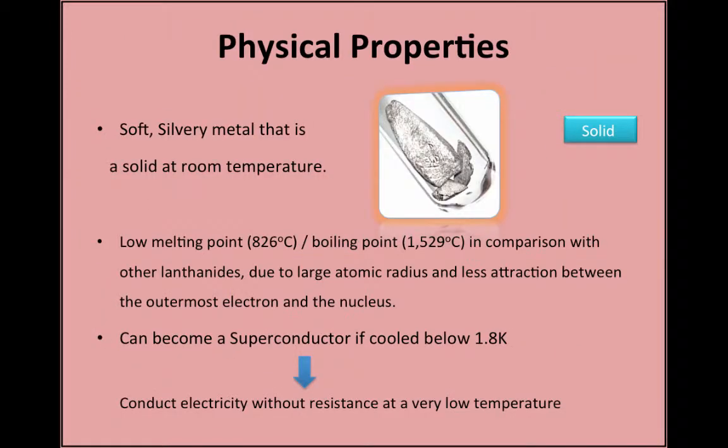The soft silvery metal europium is a solid at room temperature. Its large atomic radius and lesser attraction between its outermost electron and its nucleus could explain its lower melting and boiling point. It also can become a superconductor when cooled below 1.8 kelvins, meaning it can conduct electricity without resistance.